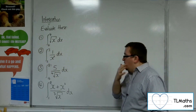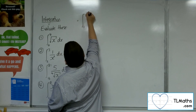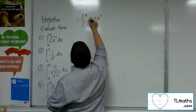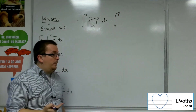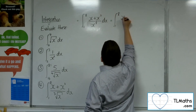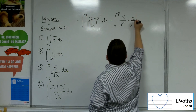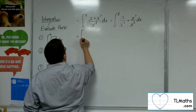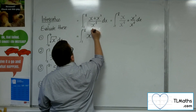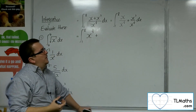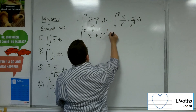Number four: we've got x plus x cubed over the cube root of x. I'm going to rewrite that as x plus x cubed over x to the one third. This is a fraction I can split up: x over x to the one third, plus x cubed over x to the one third. So let's rewrite that. We've got x to the one over x to the one third — one take away a third is two thirds — so x to the two thirds. Then x cubed over x to the one third: three take away a third — nine thirds take away a third is eight thirds.